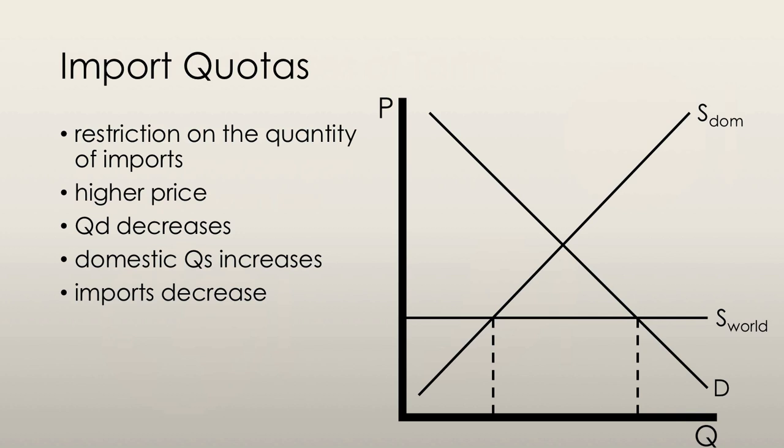Starting again at a market with free trade, when an import quota is imposed, we see a new supply curve. This supply curve has been moved horizontally by the quantity of the import quota.